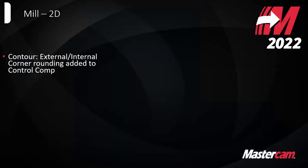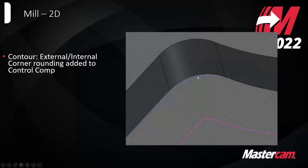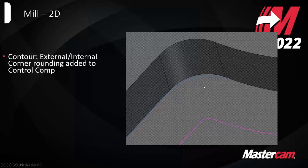Some additional 2D tool path enhancements. We added external and internal corner rounding when using control compensation. Before, if you were using computer-aware comp you had these options, but they were grayed out when using it in control. Now you can add that internal or external corner break radius — if there's a sharper corner where the tool can't fully fit, it will round that off based on whatever value you put in.